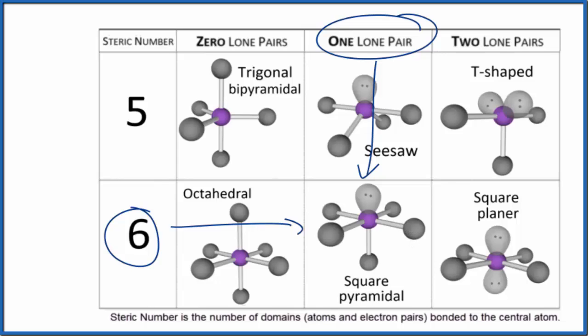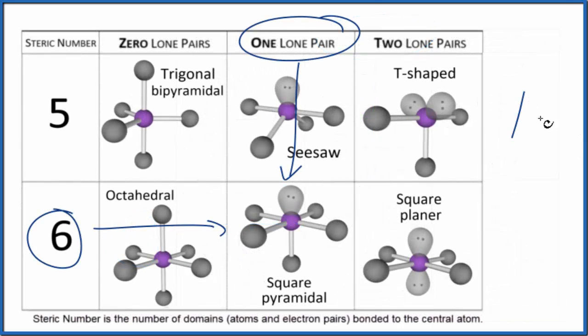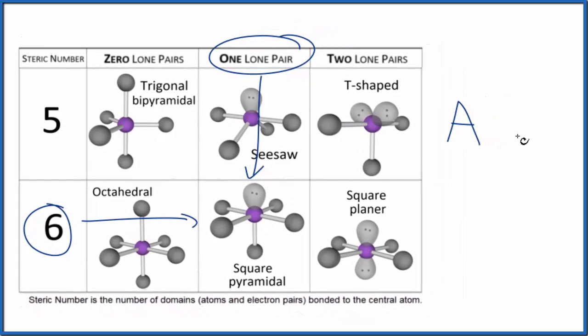We could also use what's called the AXE notation to figure out the molecular geometry for ICl5. So we have A, that's the central atom, that's the iodine. AX, that's the number of atoms bonded to it. We have five chlorine atoms. And E, that's the number of lone pairs. We have one lone pair. So we have AX5E1.